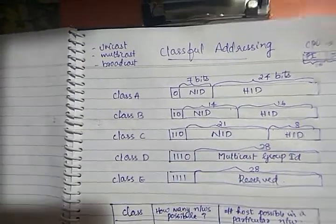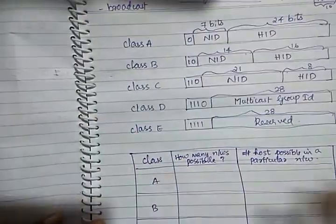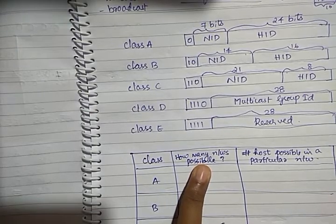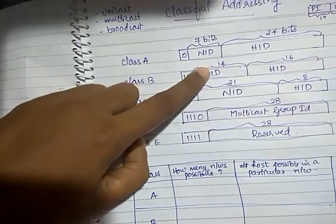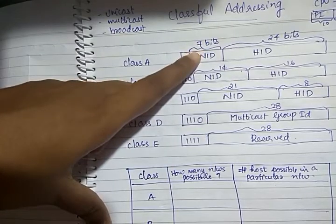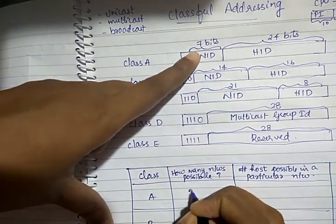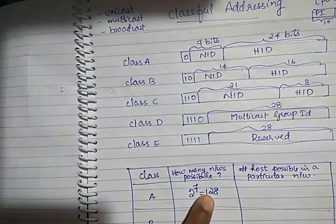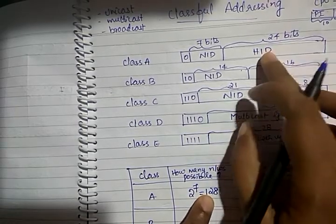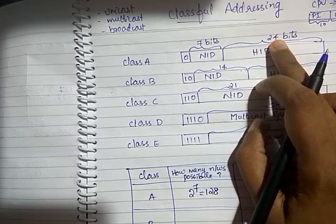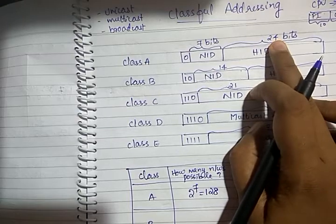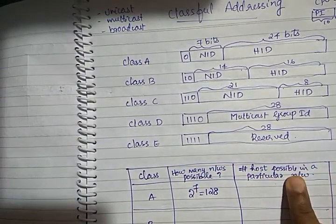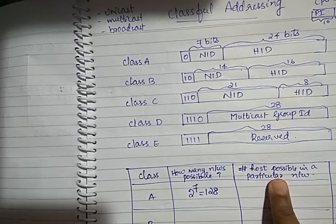You should be able to answer questions like: if it is a Class A network, how many such Class A networks are possible? Look at the Network ID portion of a Class A network — there are 7 bits. Using 7 bits, 2 to the power 7 combinations are possible, that is 128. So there are 128 different Class A networks possible. They are all very large networks because the Host ID is 24 bits, giving 2 to the power 24 possible hosts within a particular Class A network.